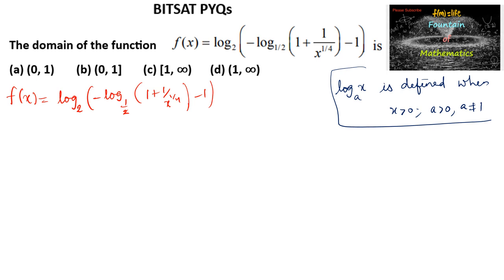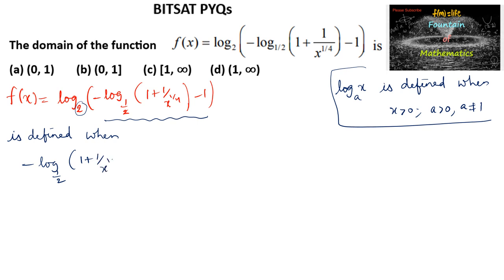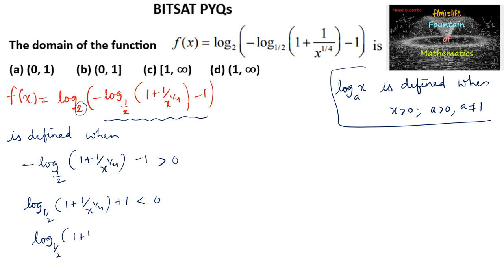Since base 2 is greater than 0 and not equal to 1, we need the argument of the outer log to be positive. So this function is defined when negative log base (1/2) of (1 + 1/x)^(1/4) minus 1 must be greater than 0. This gives us log base (1/2) of (1 + 1/x)^(1/4) plus 1 is less than 0, or equivalently log base (1/2) of (1 + 1/x)^(1/4) is less than negative 1.